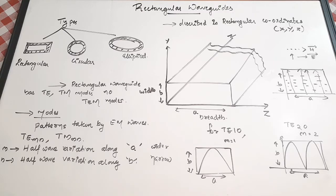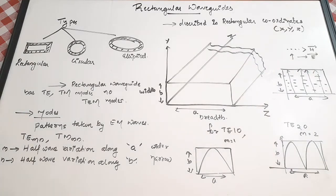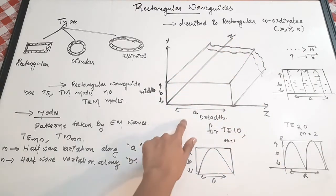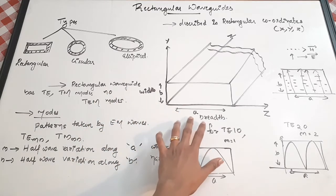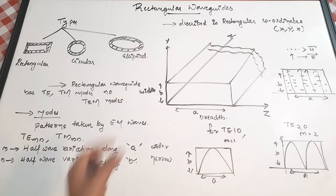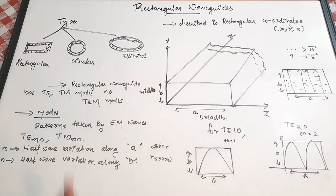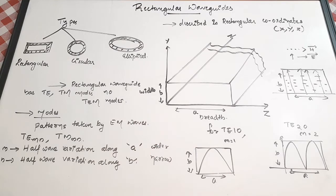Rectangular waveguides have this name because they are rectangular in shape and are described in rectangular coordinates x, y, and z. The general structure of a rectangular waveguide has a breadth of 'a' — always remember that 'a' is the wider dimension of the rectangle. Then 'b' is the narrow dimension. These two variables are very important: 'a' is the breadth and 'b' is the width.